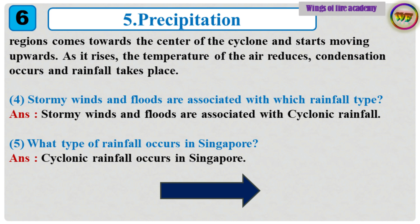4. Stormy winds and floods are associated with which rainfall type? Answer: Stormy winds and floods are associated with cyclonic rainfall. 5. What type of rainfall occurs in Singapore? Answer: Cyclonic rainfall occurs in Singapore.